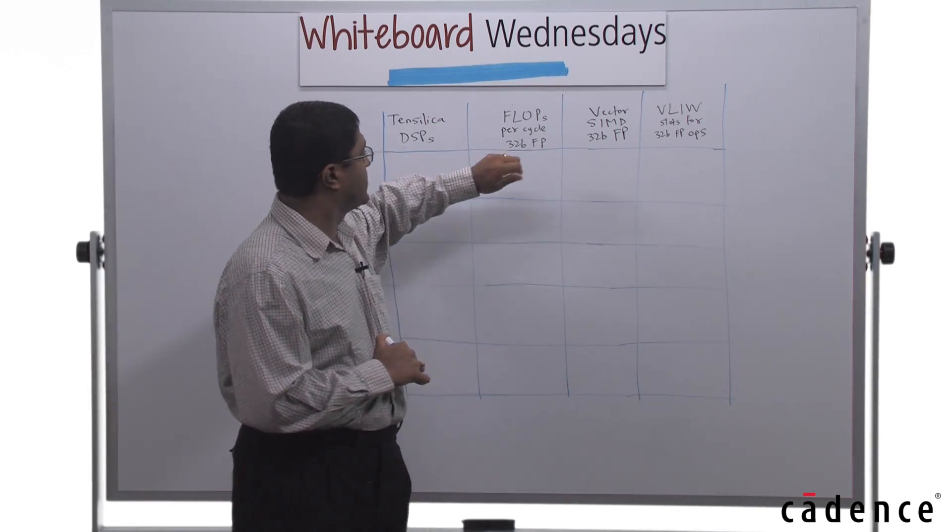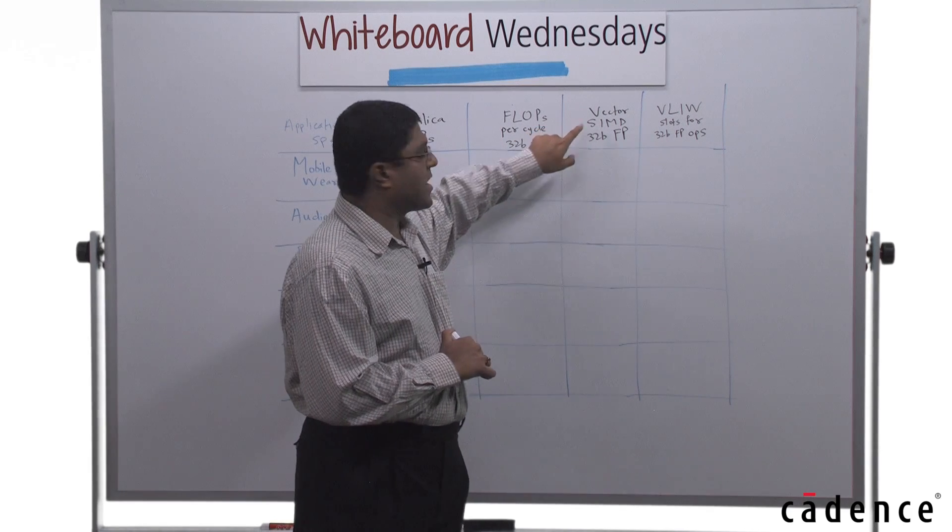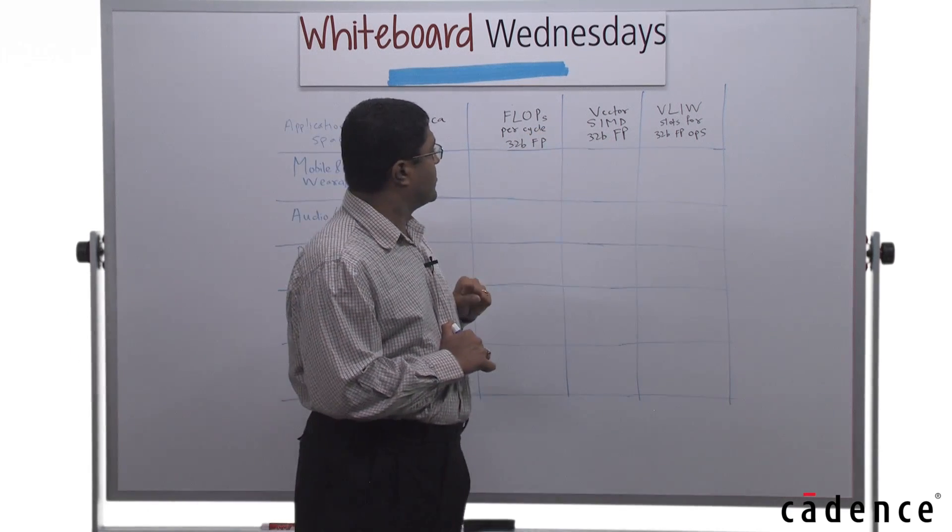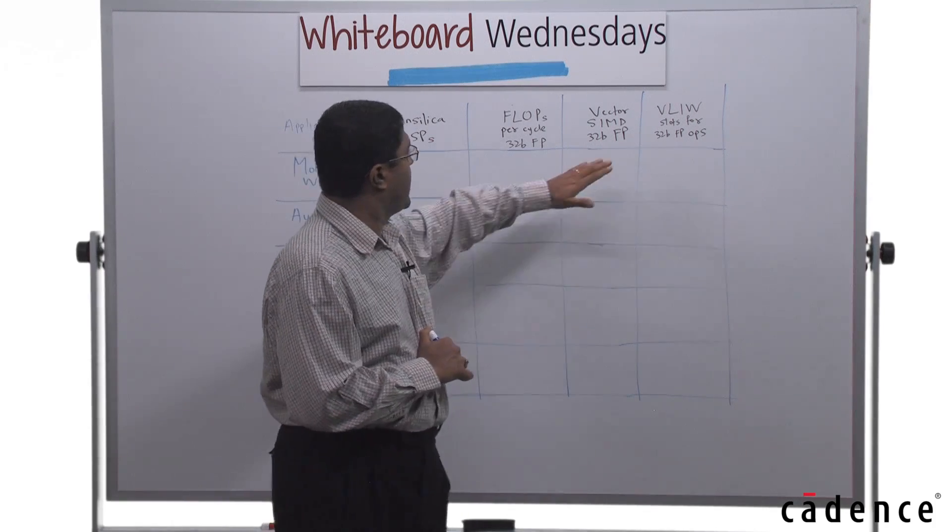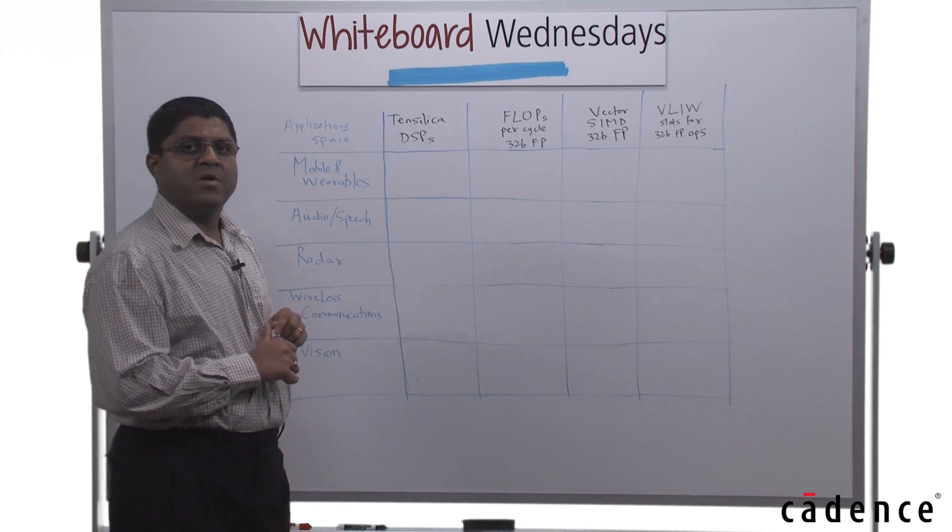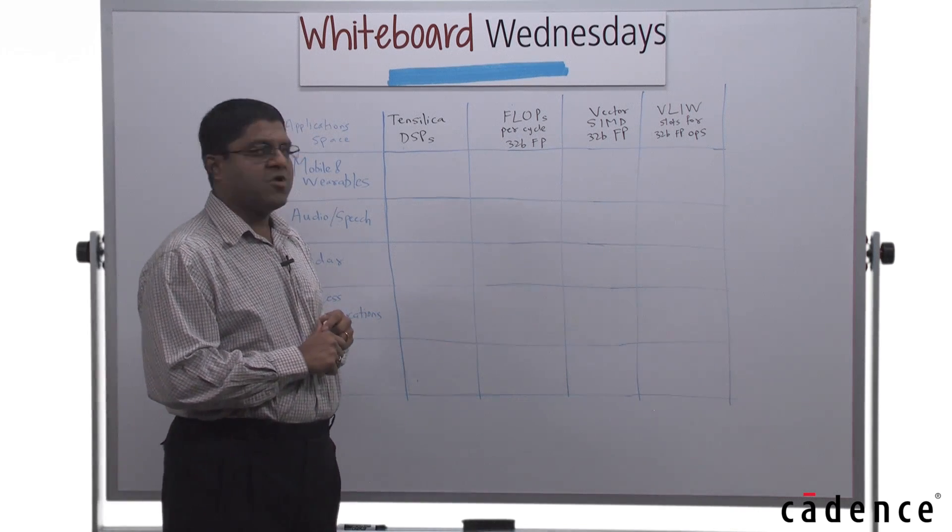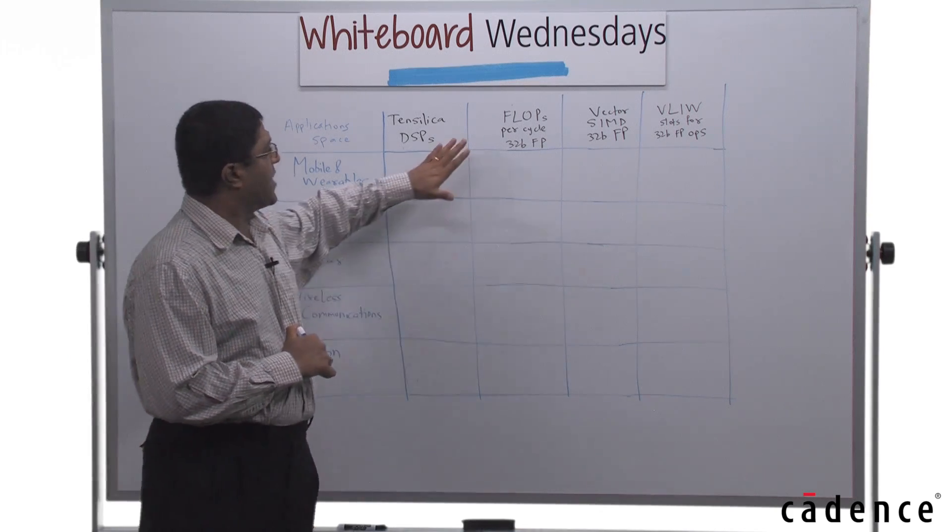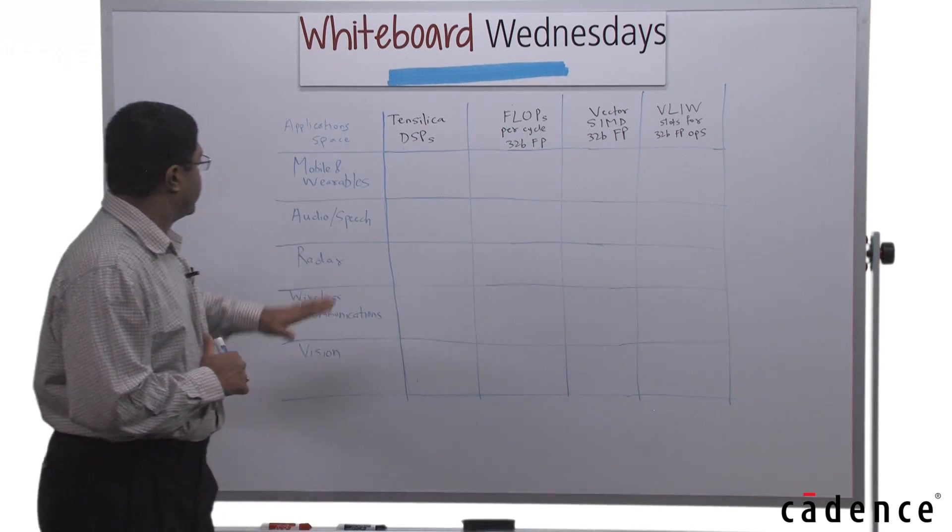That's how we count FLOPS. We will look at the vector SIMD width for the 32-bit floating point support on each of the DSPs, and we will look at the number of slots in VLIW DSP, the number of slots which schedule floating point operations. We will look at each of these things for the DSPs.